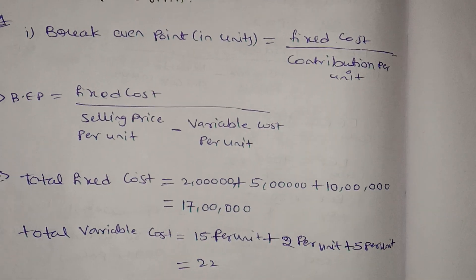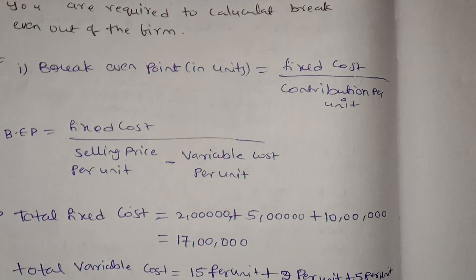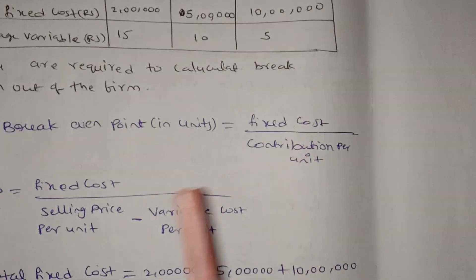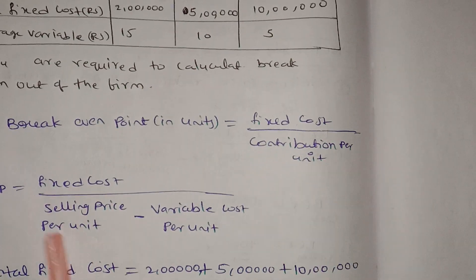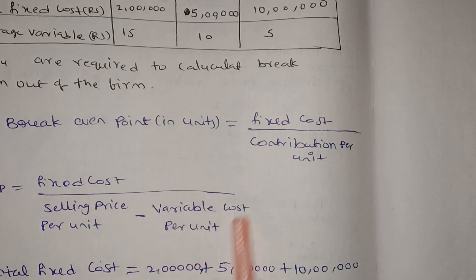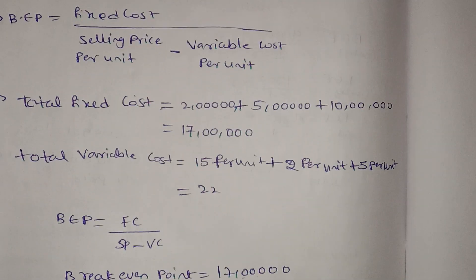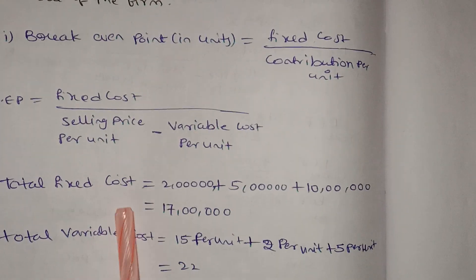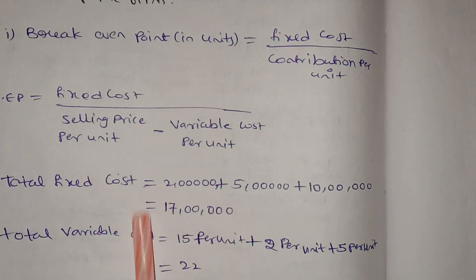Now we have the fixed cost. Contribution equals selling price minus variable cost.